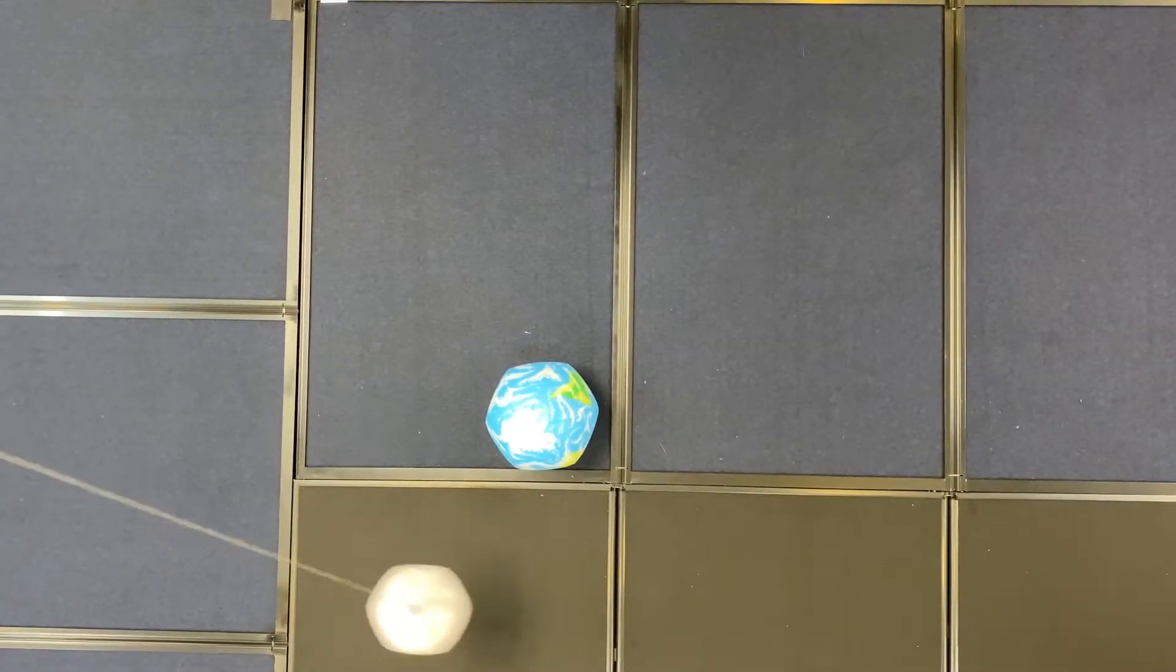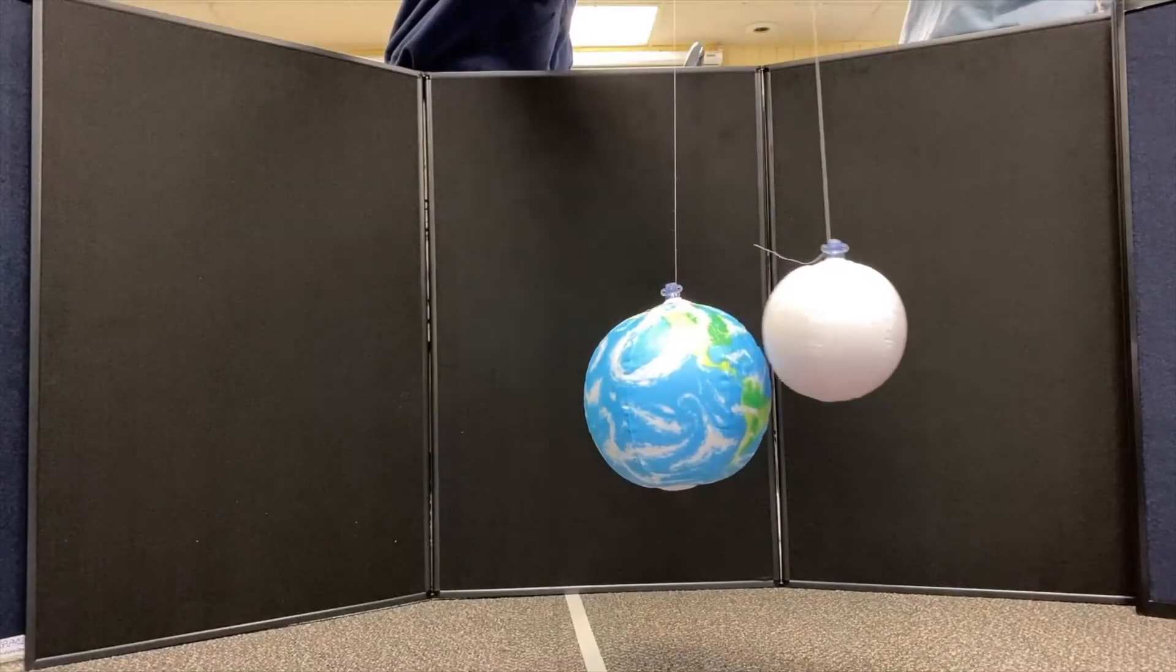We know that the moon orbits the Earth. The time it takes to go around the Earth is about 27 days.